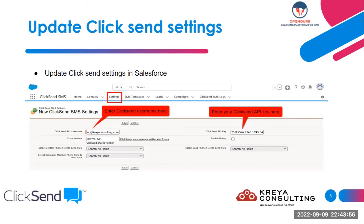You need to put the API key in the API key field. Also, you need to put your username which you use to log in to your ClickSend account. There are other fields such as from number and a couple of drop-downs. You can leave these fields blank or choose to fill them, but these are not mandatory.